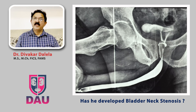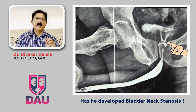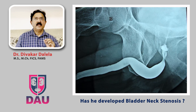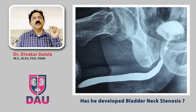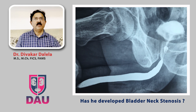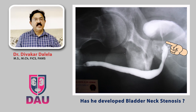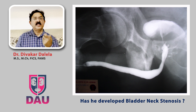Now I would like to show some representative retrograde urethrogram pictures. Here is a patient who has a normal anterior urethra, but you will appreciate there is some narrowing at the level of the bladder neck. In this urethrogram you can appreciate narrowing — more appropriately, a fine streak of contrast going into the bladder. In this patient again you will notice the same: a dilated prostatic urethra and a fine streak going across the stenotic segment of the bladder neck into the bladder.